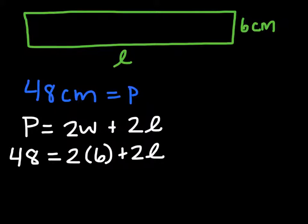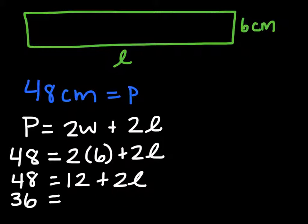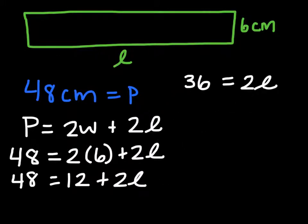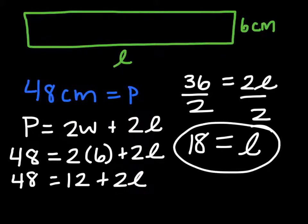Now we simply solve. 48 equals 2 times 6, which is 12, plus 2L. We'll subtract 12 from each side, giving us 36 equals 2L. And then we solve by dividing each side by 2, giving us an answer of 18 equals the length. We've just solved the same problem using very similar logic, but one way with arithmetic and the other using algebra.